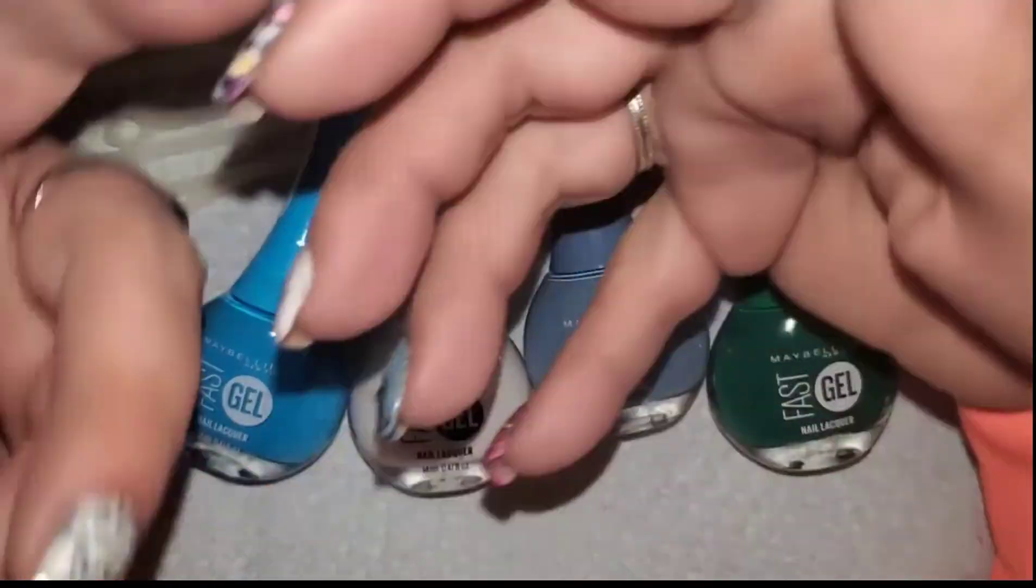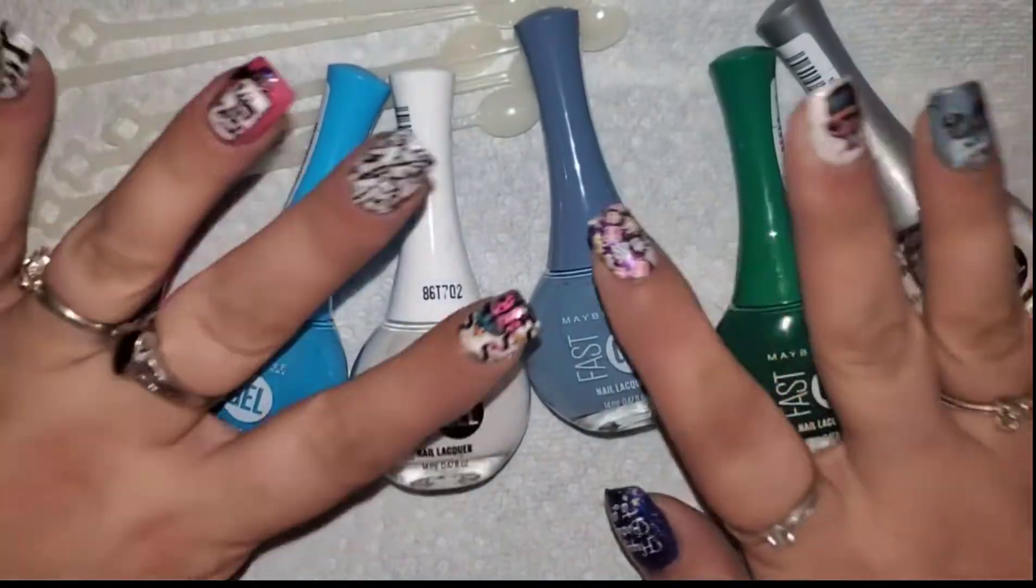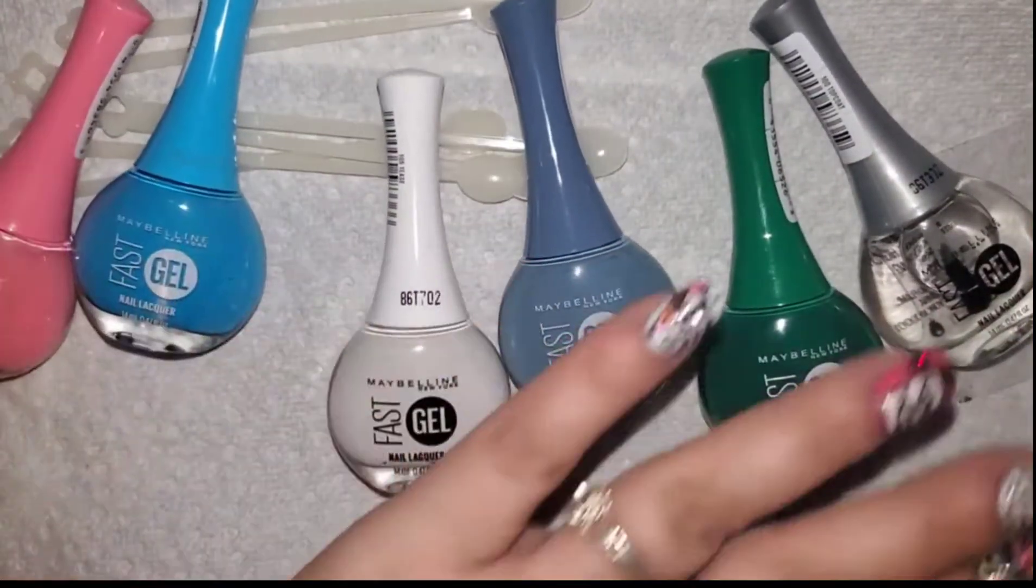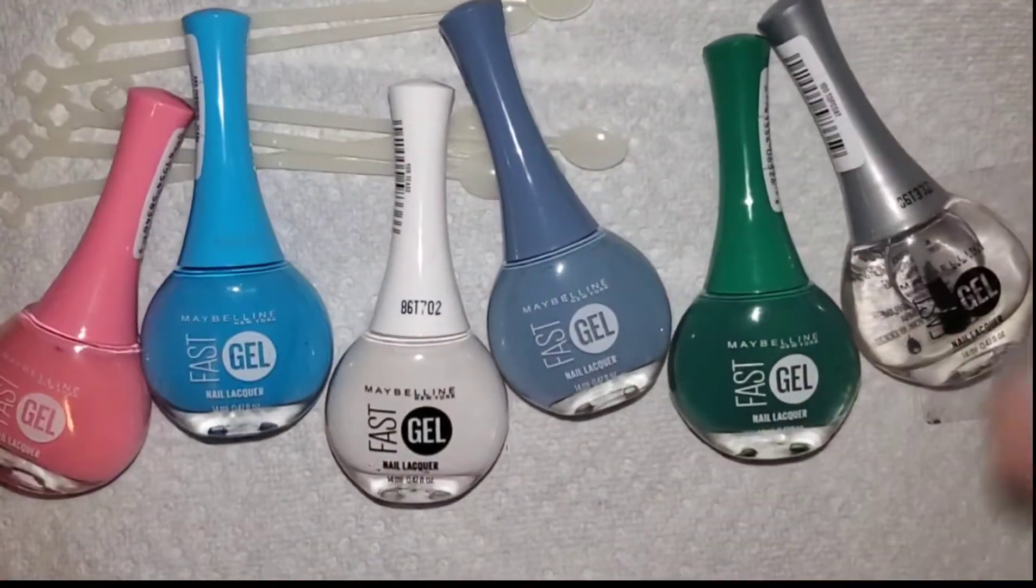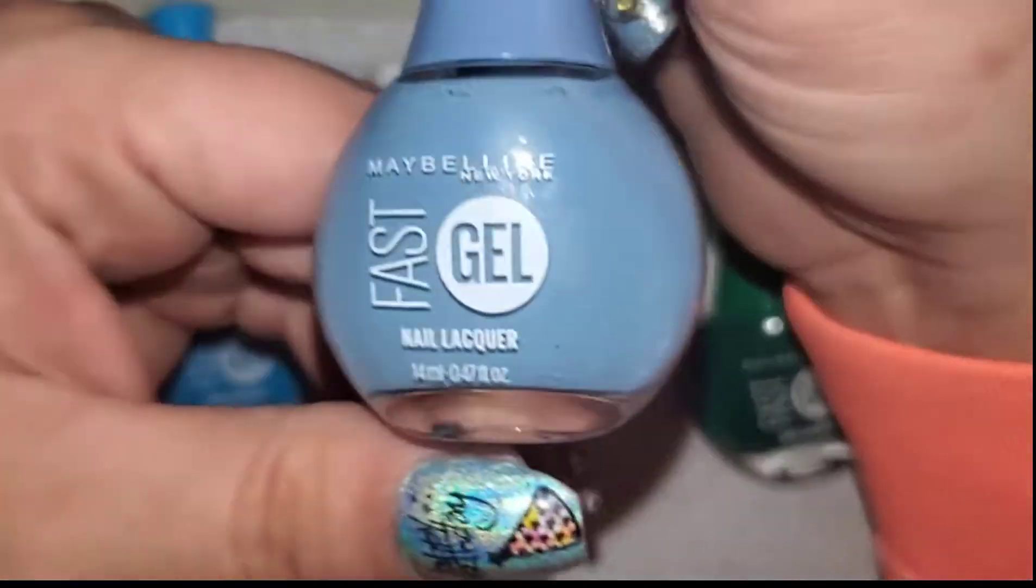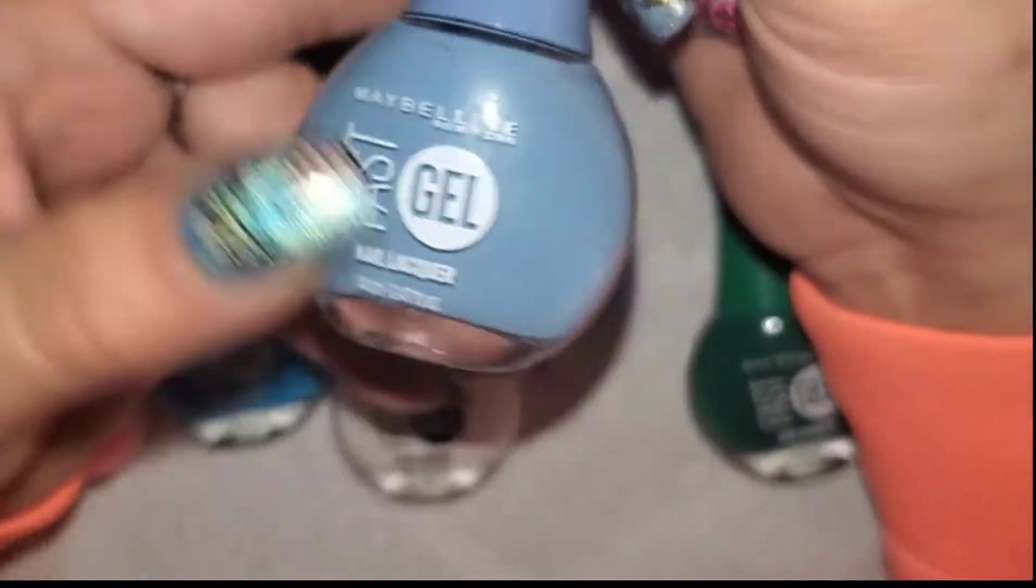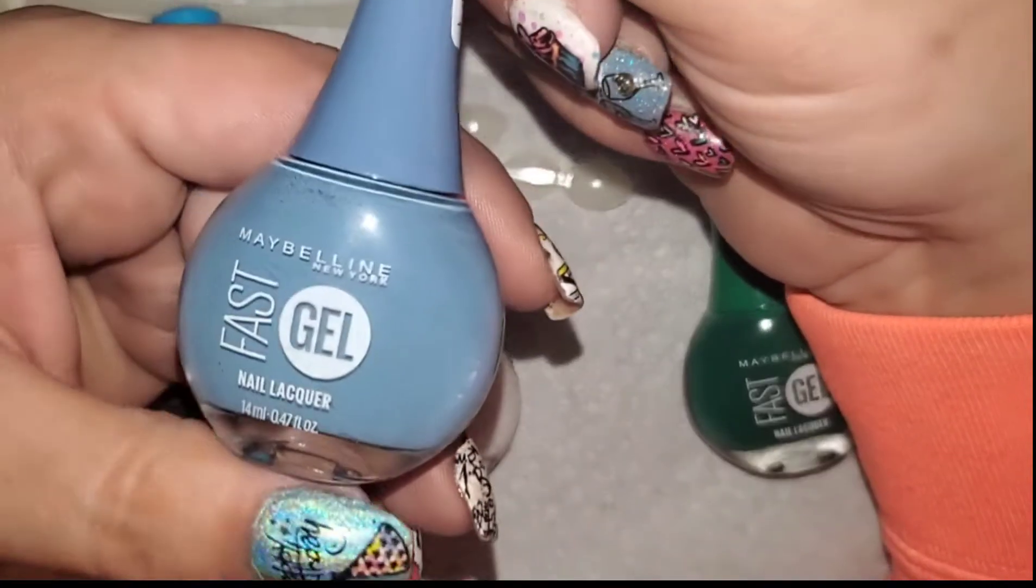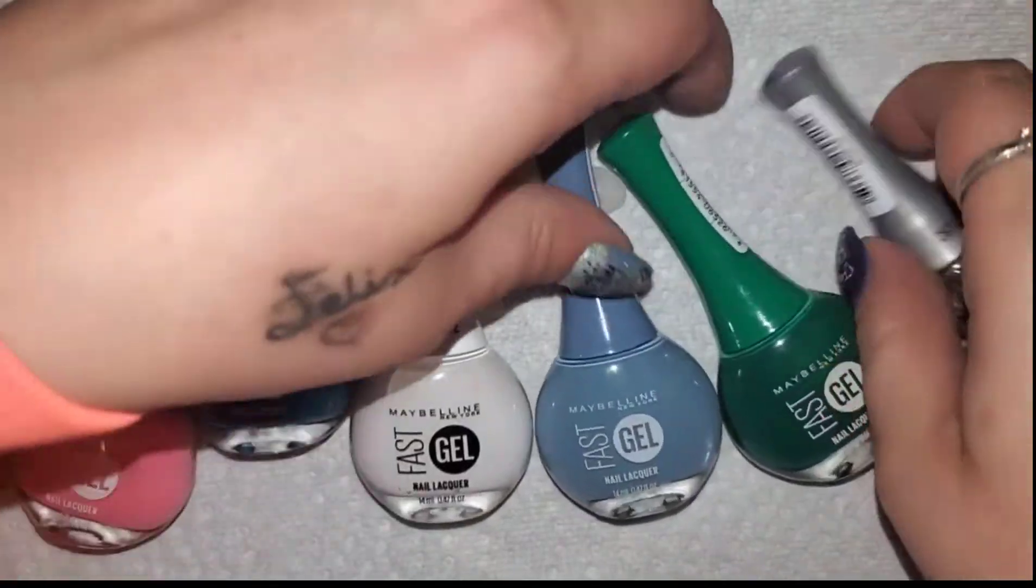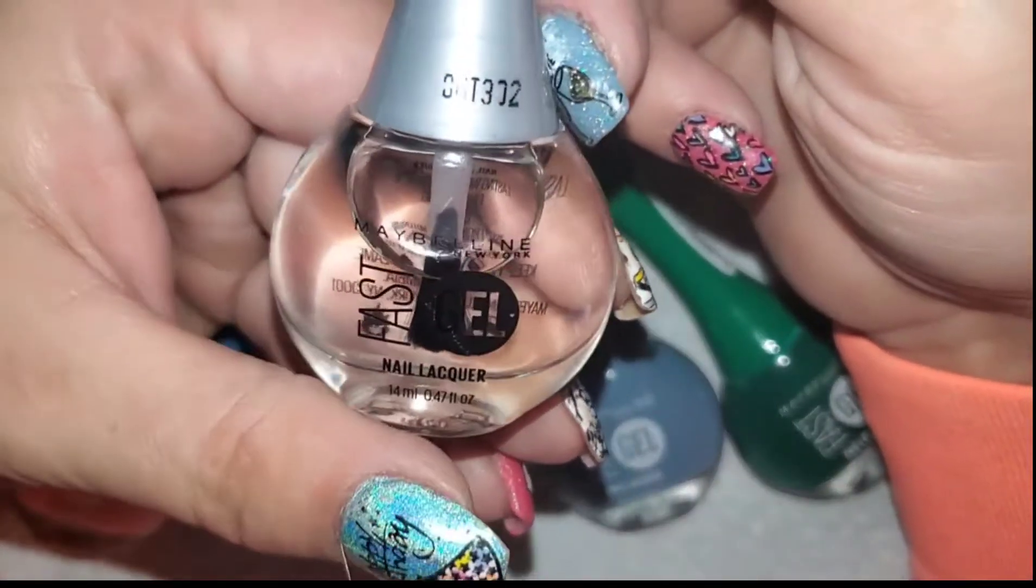They were $2.50, so two for five. I look at it like five, ten, fifteen dollars for six Maybelline polishes. It says Fast Gel, but it's gel-like, no UV lamp needed. I'm just going to swatch these.